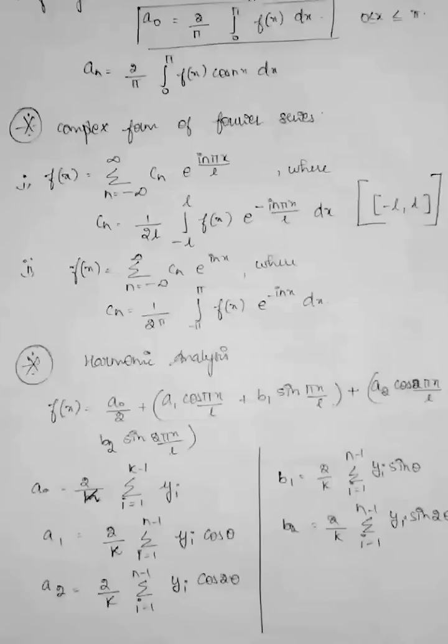So this is for the limit minus l to l. If your limit is from minus π to π, then the formula will be: f(x) = Σ(n=-∞ to ∞) cₙ e^(inx) where cₙ = (1/2π) ∫₋ₗˡ f(x) e^(-inx) dx. There is no difference, just substitute π instead of l. That's it.